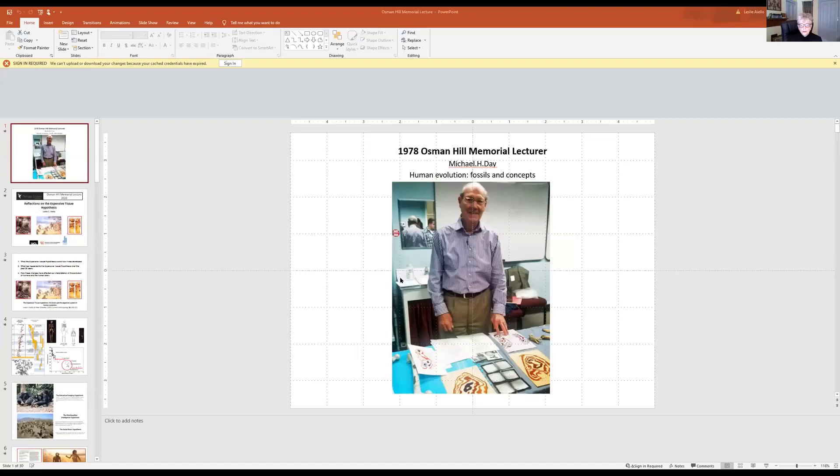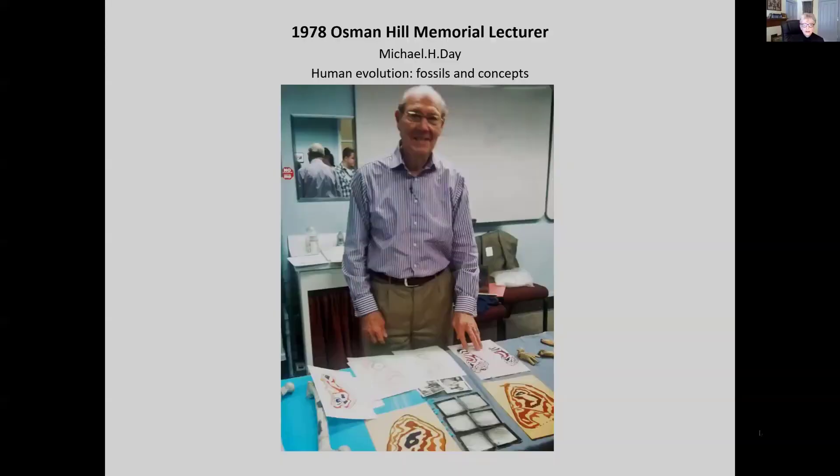Hello, everybody. I'm Leslie Aiello, and I'm talking to you today from Brooklyn, New York. It's a shame that we can't be together for this year's Osmond Hill lecture and for the PSGB meeting. It would have been lovely to reconnect with all of my old PSGB friends and to see what's happening with the Modern Association.